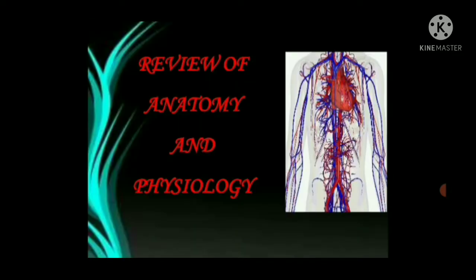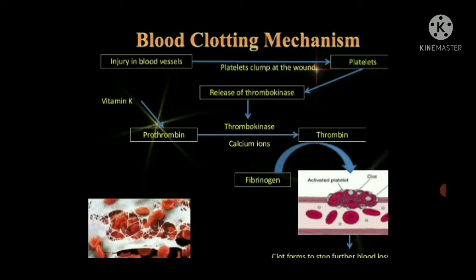Now a review of normal physiology — the blood coagulation mechanism. When there is an injury to a blood vessel, thrombokinase is activated. Thrombokinase acts on prothrombin along with calcium ions to form thrombin, which then acts on fibrinogen to form a fibrin clot that stops further blood loss. This is the normal blood clotting mechanism.